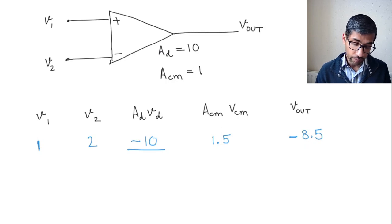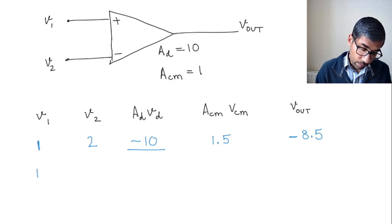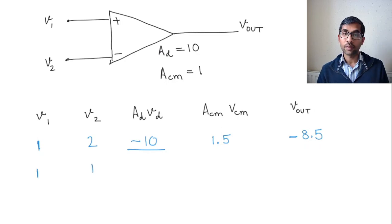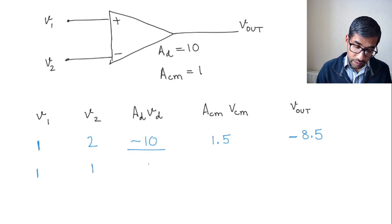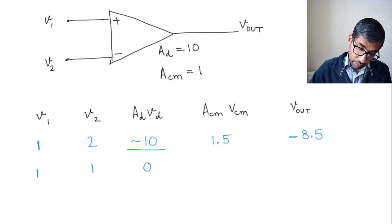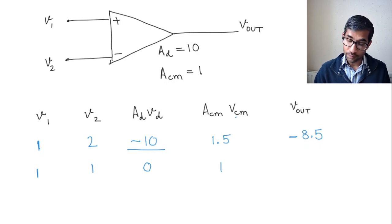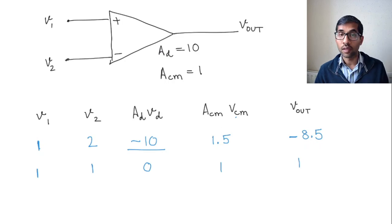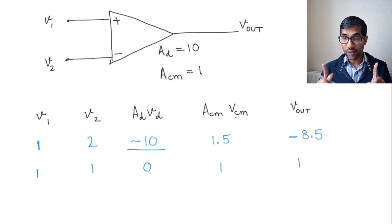Let's take a look at a slightly different situation. And in this case, let's take 1 volt and 1 volt. And in this case, you can see that the differential voltage is going to be 0, so the output due to the difference is going to be 0. But in the common mode, you will have 1, right? Because VCM is 1 plus 1 over 2, which is 1, and ACM is 1 again. So 1 times 1 is 1, and therefore the Vout is going to be 1 volt. So you gave V1 and V2 as 1 volt and 1 volt, and you got Vout as 1 volt.